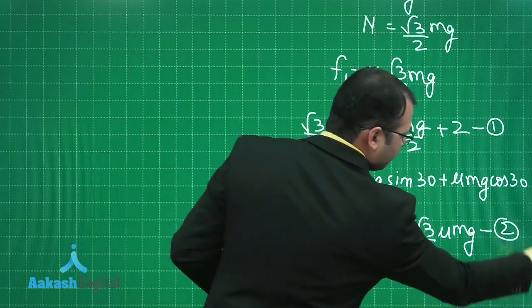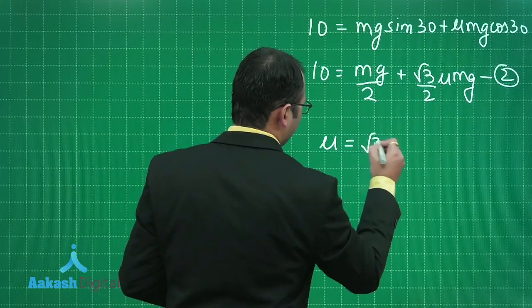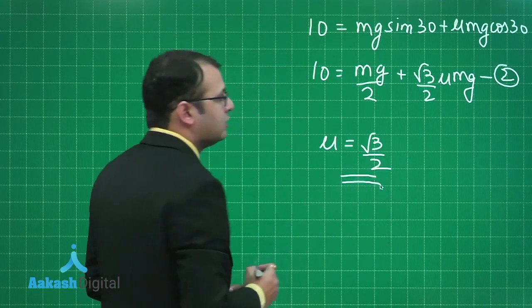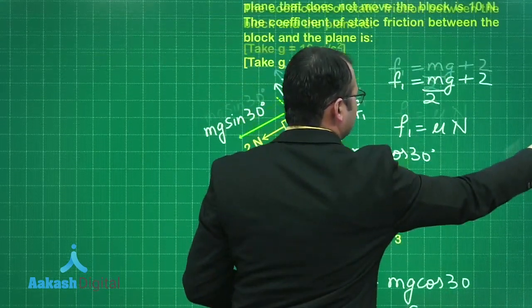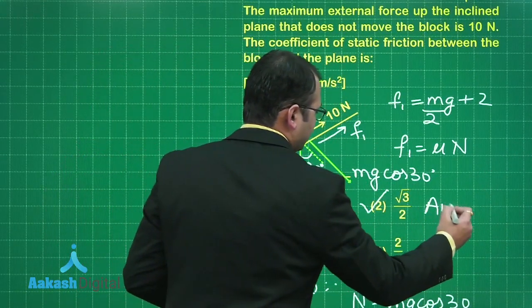From equation 1 and 2, when you compare you will find that μ will be equal to root 3 by 2. So among the four options given, option number 2 is the right answer.